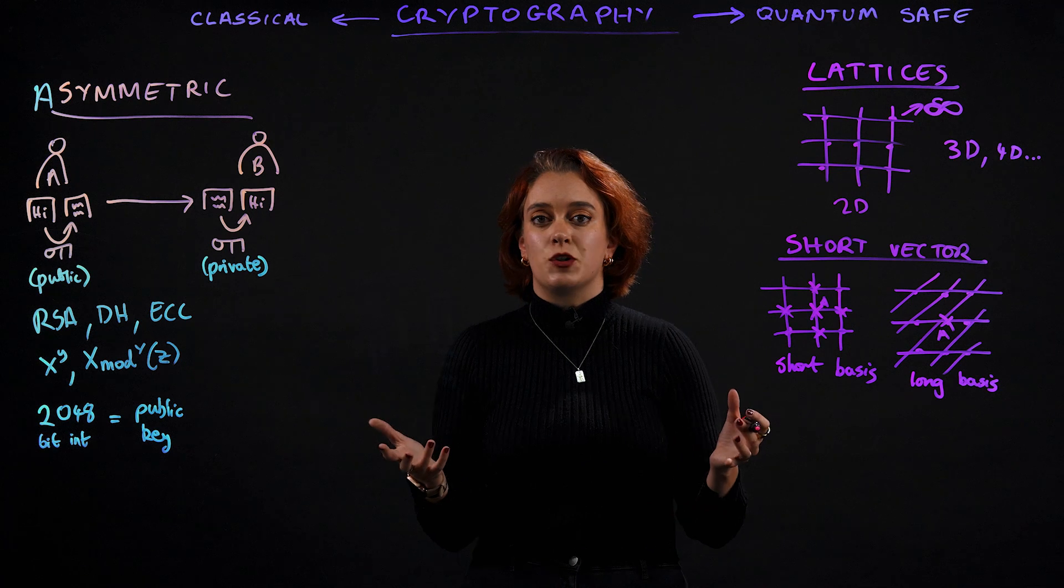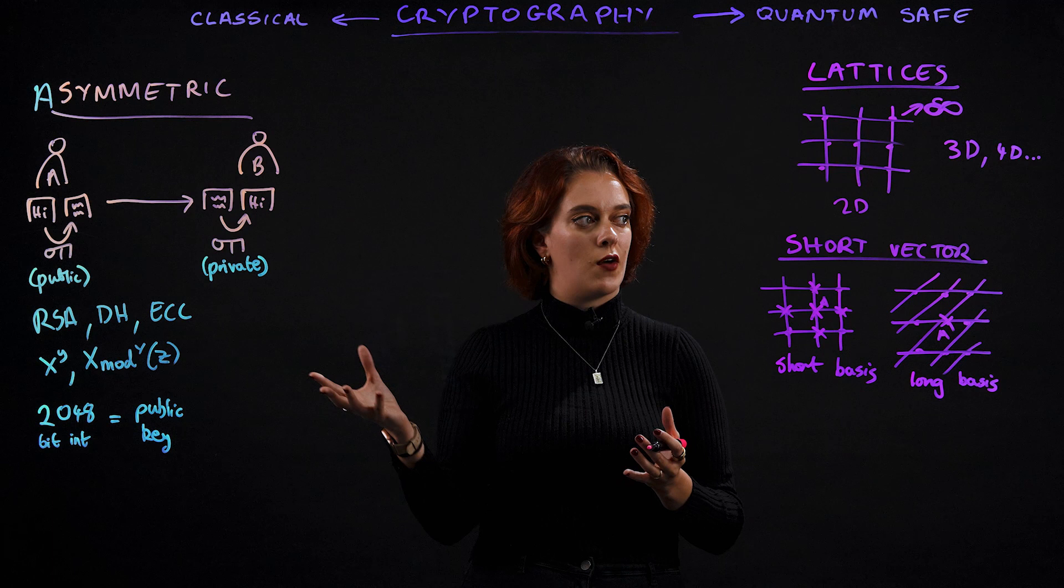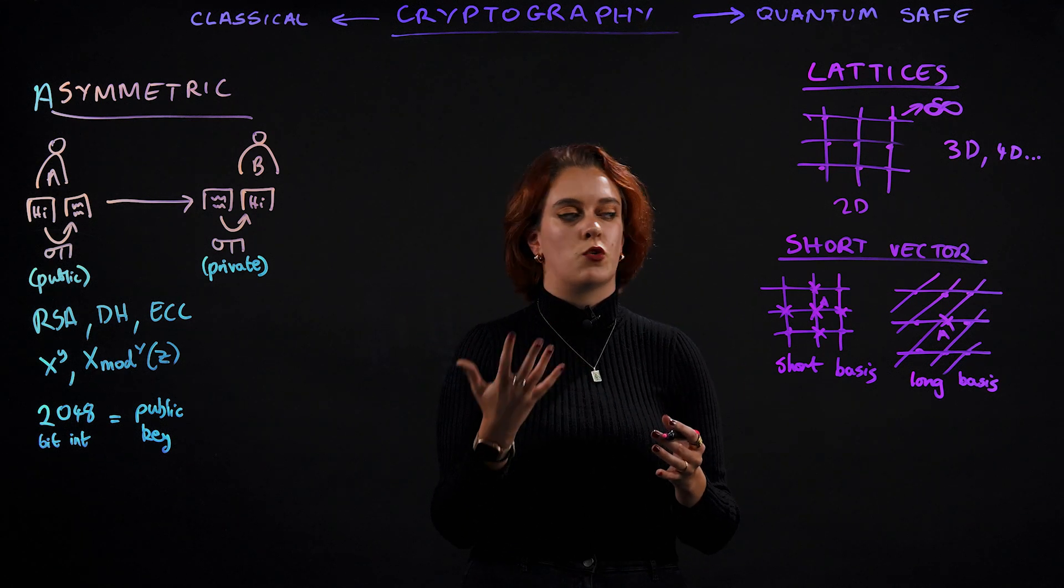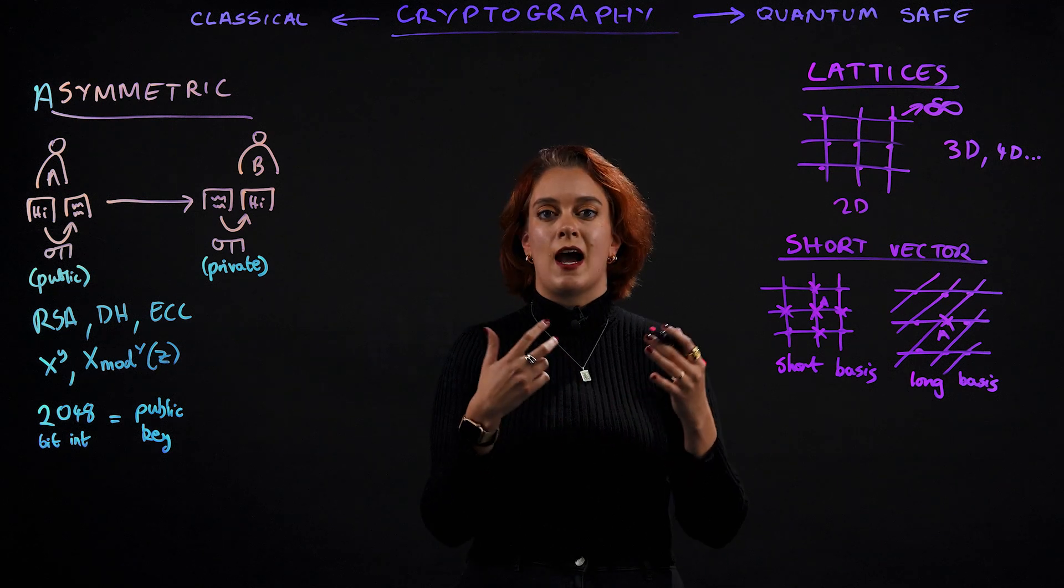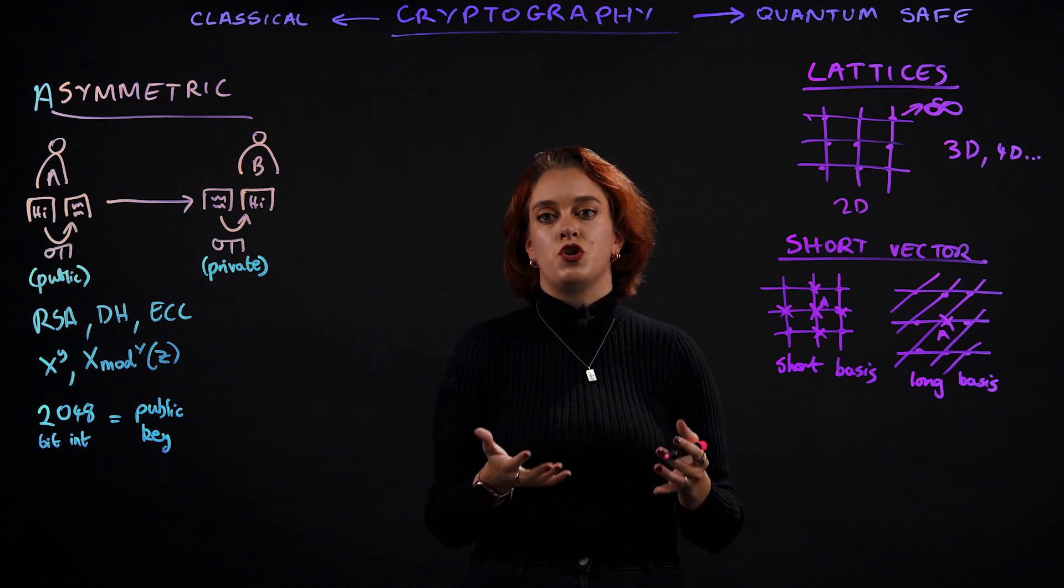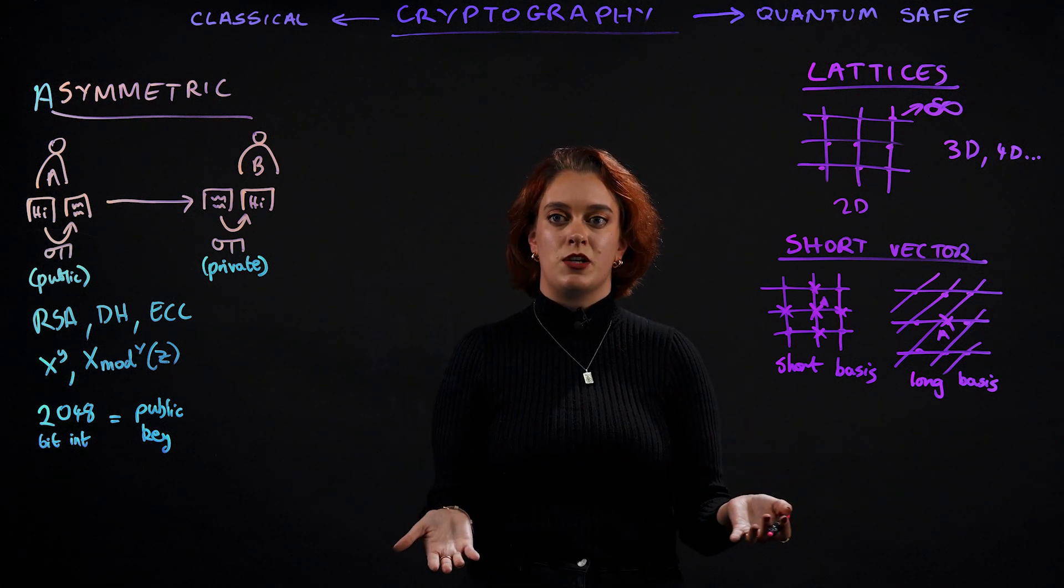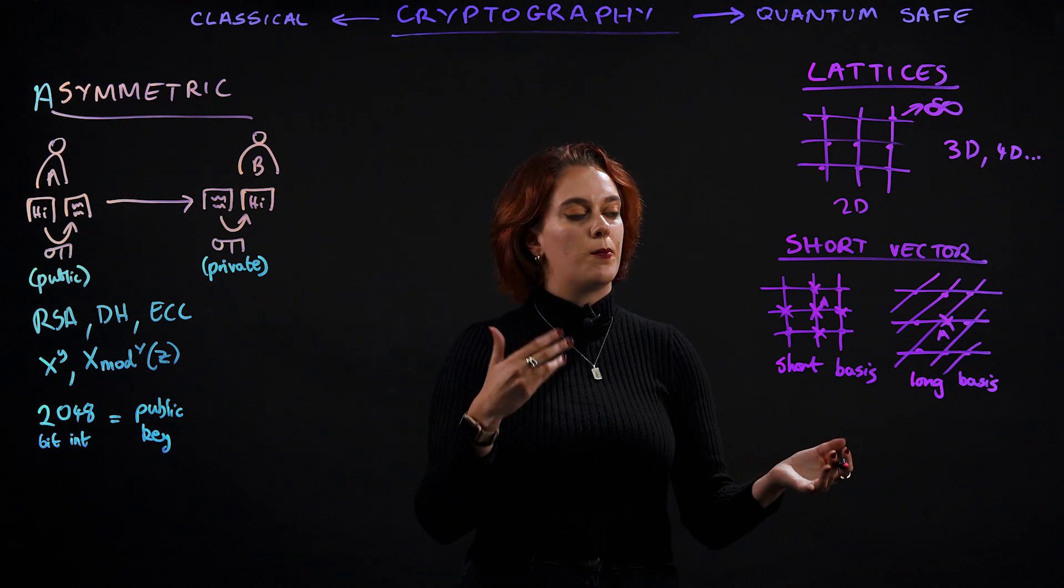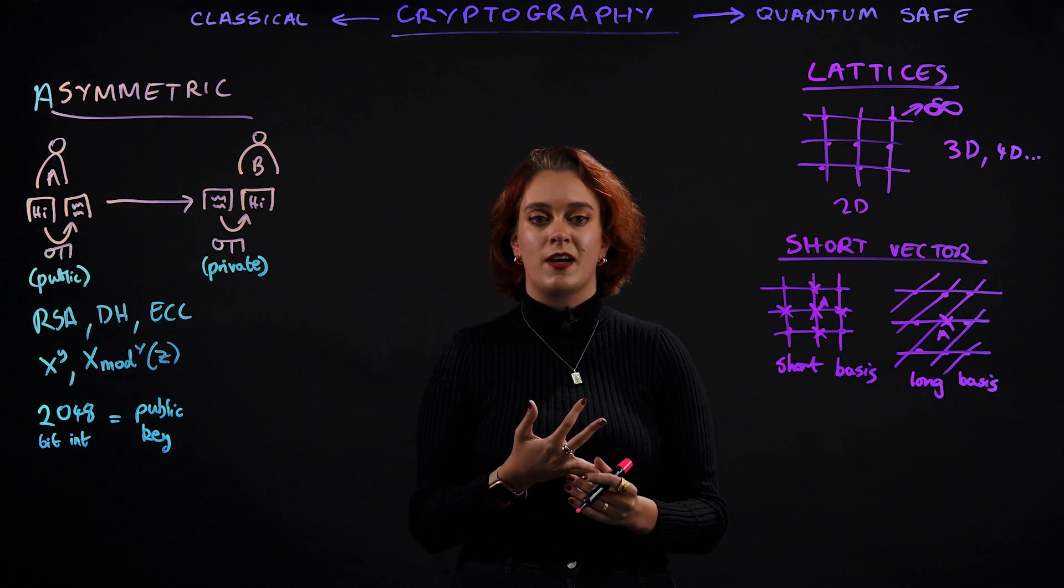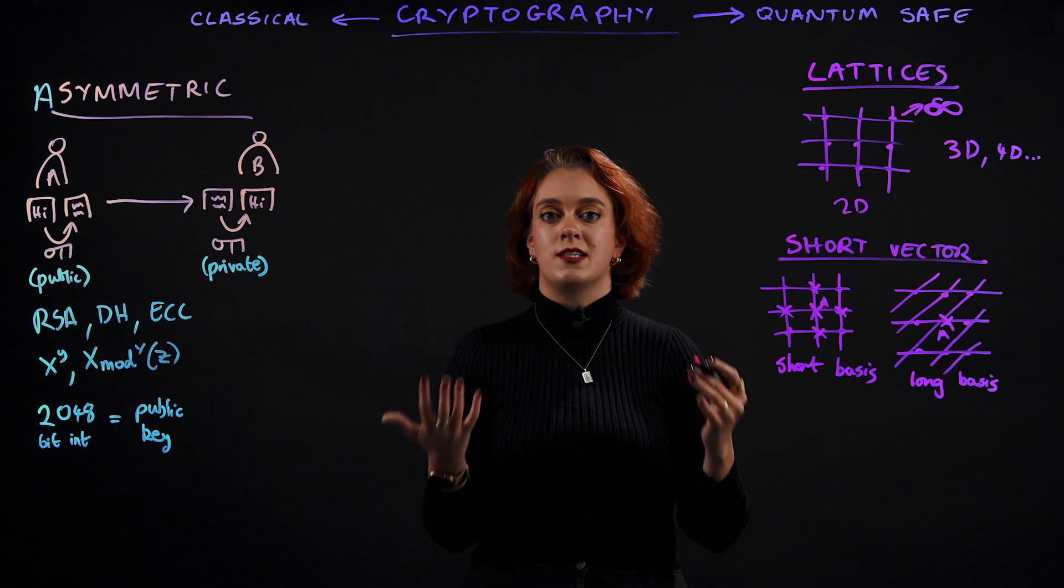It might still be many years before quantum computers can crack algorithms like RSA. But it also takes a really long time for teams and organizations to adopt and deploy new cryptographic standards. The National Institute for Standards and Technology says it can take anywhere from five to 15 years to implement new cryptographic standards. As you can imagine, it takes time to train developers and cybersecurity professionals, as well as implement the new standards.